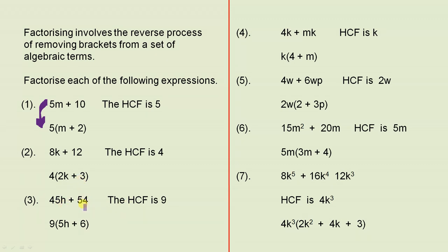The HCF of 45h and 54 is 9. Of course that's the highest number that divides into both of those. Put 9 outside the brackets. 9 times what gives you 45h? It has to be 5h. 9 times what gives you 54? It has to be 6. That's the answer.